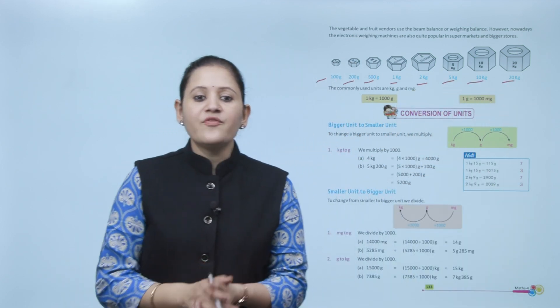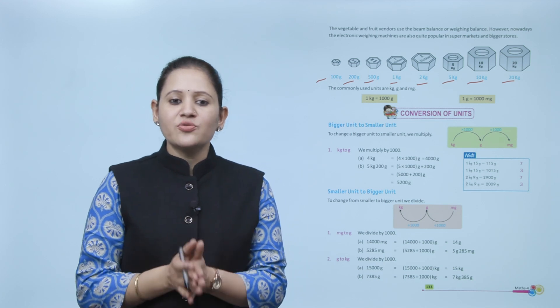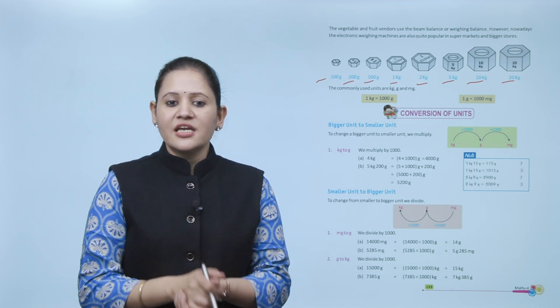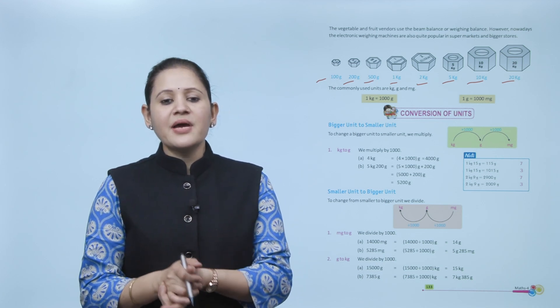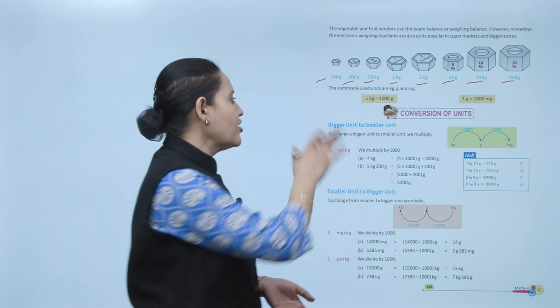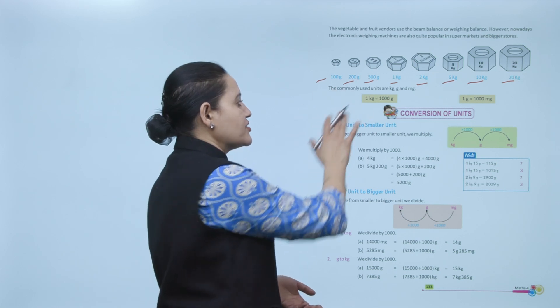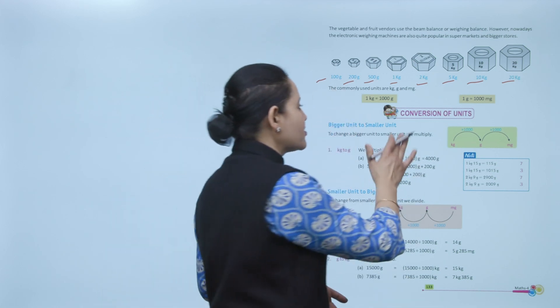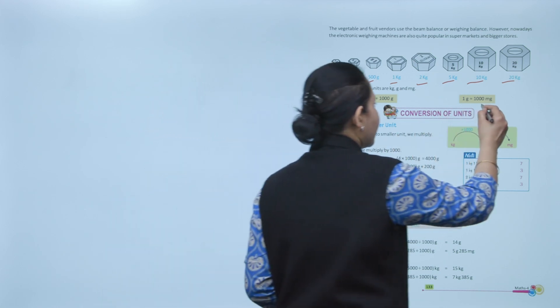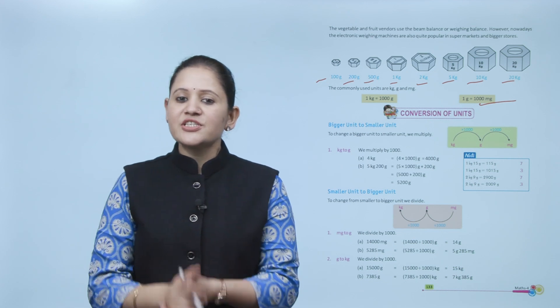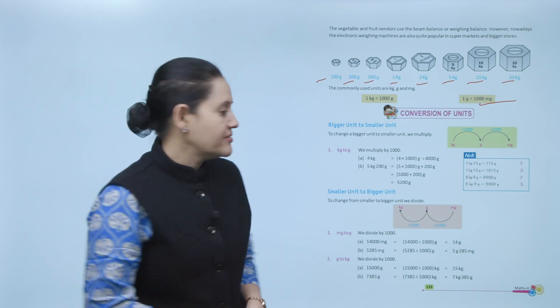The commonly used units are kilogram, gram, and milligram. One kilogram equals 1000 grams, and 1 gram equals 1000 milligrams. Next is conversion of units.